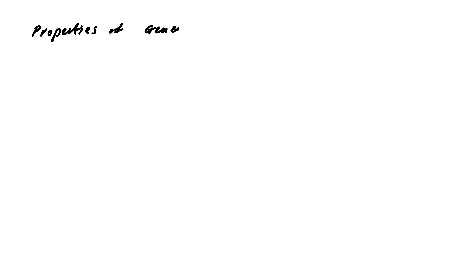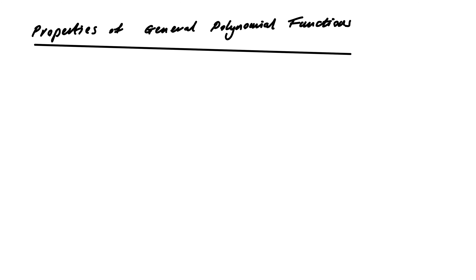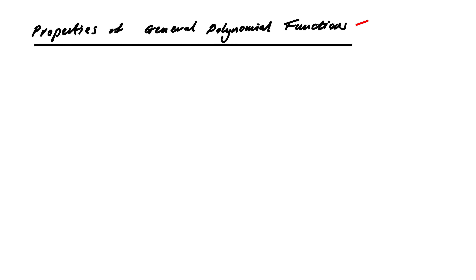Just to remind us, by a general polynomial function I mean a function of the form a₀ + a₁x + … + aₙxⁿ, where x is the variable and the coefficients a₀ up to aₙ are constants.